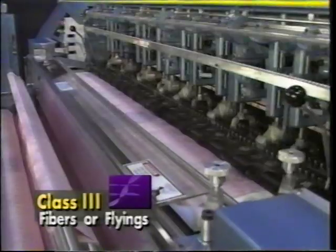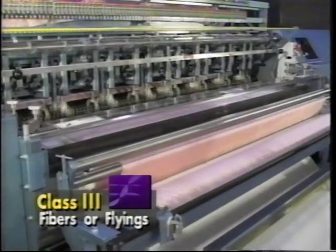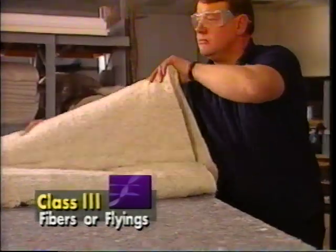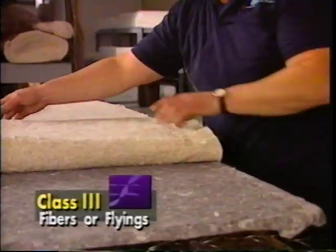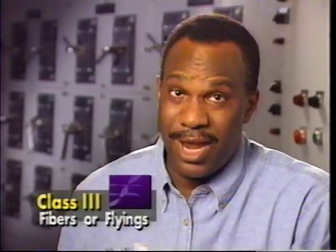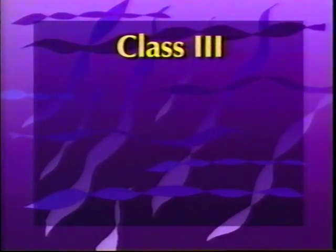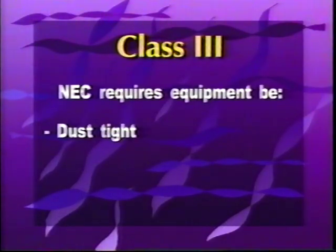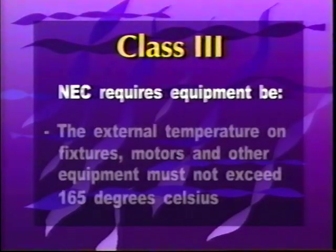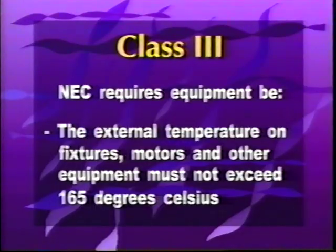A Class 3 hazardous location is any area where ignitable fibers or flyings are present. The main concern with fibers and flyings is the fire hazard created when they collect on equipment and cause heat buildup. Cotton and textile operations are good examples of Class 3 areas. Equipment in Class 3 locations must be dust tight, prevent the escape of sparks, operate at a temperature below combustion, and the external temperature on fixtures, motors, and other equipment must not exceed 165 degrees Celsius.